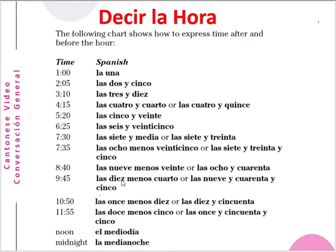Seven forty-five: las ocho menos veinticinco, o las siete y treinta y cinco. Eight forty: las nueve menos veinte, o las ocho y cuarenta. Nine forty-five: las diez menos cuarto, o las nueve y cuarenta y cinco. Ten fifty: las once menos diez, o las diez y cincuenta. Eleven fifty-five: las doce menos cinco, o las once y cuarenta y cinco.